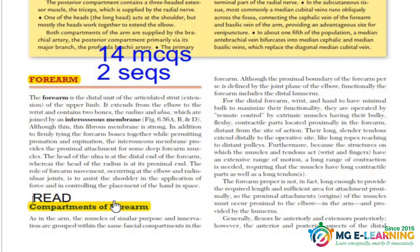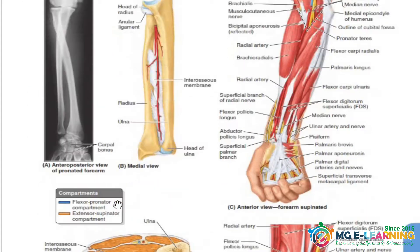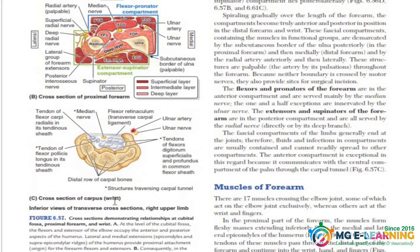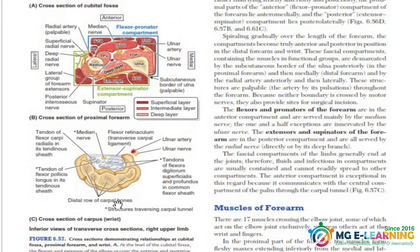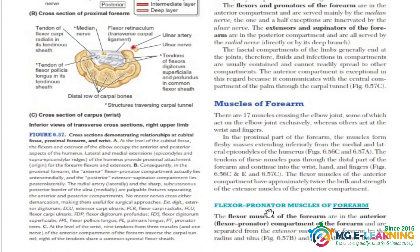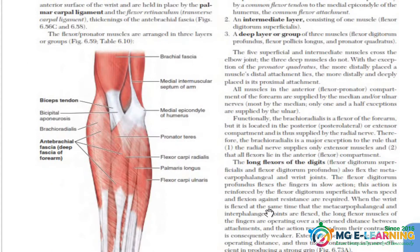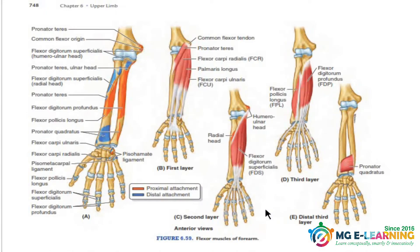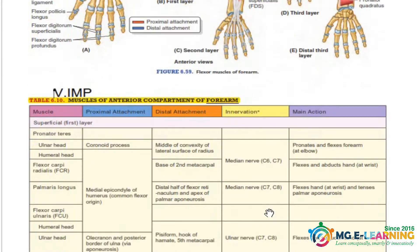Moving forward, the compartments of the forearm — just give it a read, not that important. If you talk about the muscles of the forearm, you have to learn the tables of KLM to cover the muscles. You don't have to go for the details of the muscles, especially what we call the theory of the muscles — you don't have to go for these. These diagrams are important for concept-based learning.